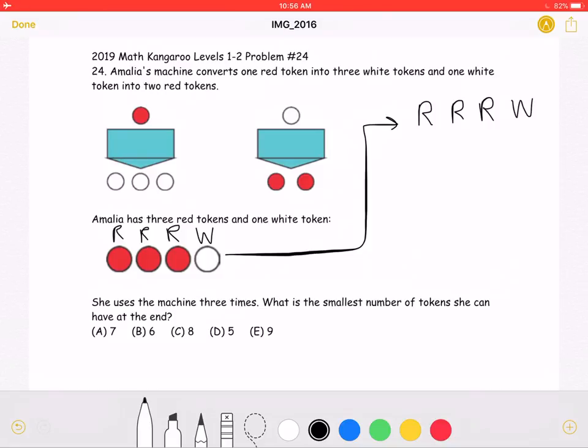The problem asks for what is the smallest number of tokens she can have after using the machine three times. As we can see here, the two conversions the machine does is one red to three whites or one white to two reds.